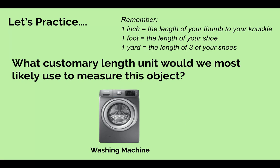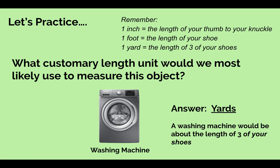Let's practice. Remember: one inch is the length of your thumb to your knuckle, one foot is the length of your shoe, and one yard is the length of three of your shoes. What customary length unit would we most likely use to measure a washing machine? The answer is yards. A washing machine would be about the length of three of your shoes, or it could be the length of six of your shoes, which would be two yards.